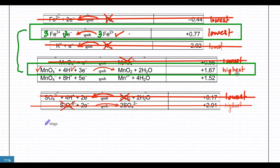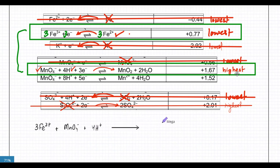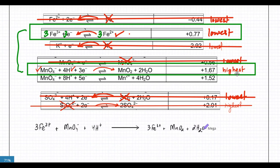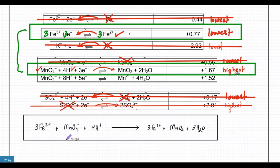Adding up the reactants: 3Fe²⁺ plus MnO₄⁻ plus 4H⁺. The products are 3Fe³⁺ plus MnO₂ plus 2H₂O. That's step one of the reaction - that's the first equation we're getting.